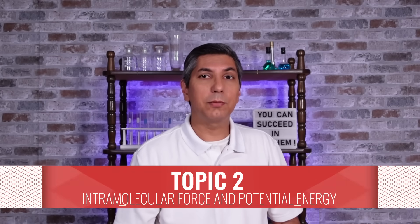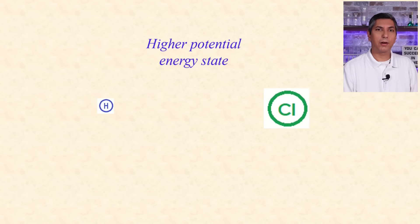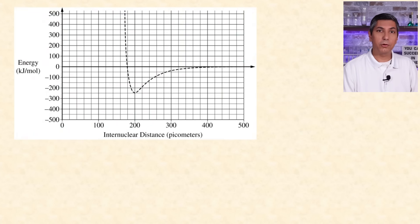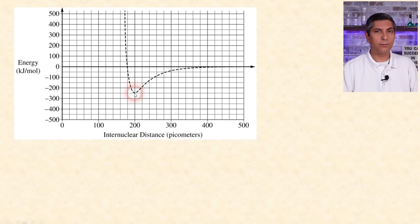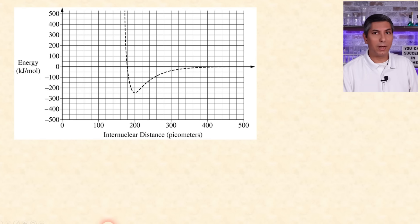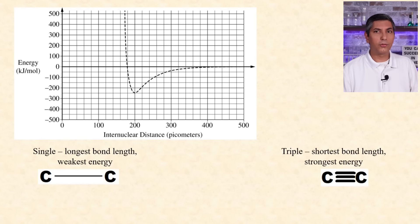Energy of bonds has a lot to do with how atoms interact with each other. Generally speaking, the farther away two atoms are from each other, the higher their potential energies are, and as they get closer to form a bond, their potential energies decrease. This graph shows how potential energy between two atoms changes as the distance between them changes. The bond length is determined by the lowest point on the graph — in this case, 200 picometers. The bond energy is the absolute value of the potential energy at that point, which would be 250 kilojoules per mole. Bond order is just another way of saying single, double, or triple bonds. Single bonds are the weakest and the longest, while triple bonds are the strongest and the shortest. Double bonds are in the middle.